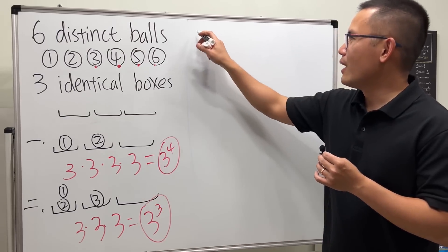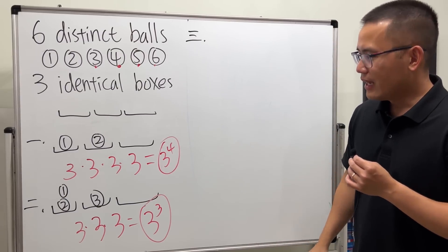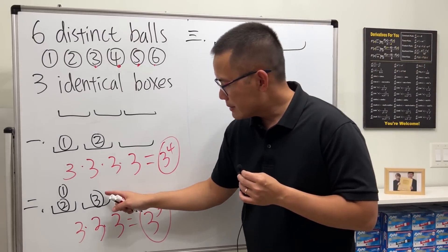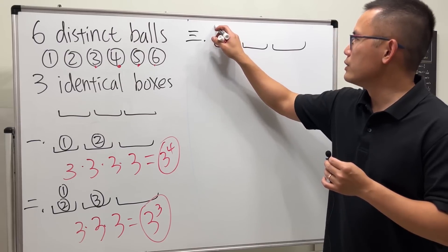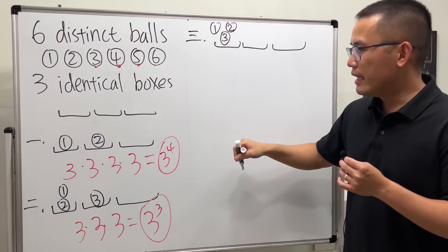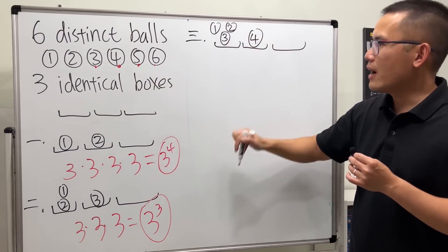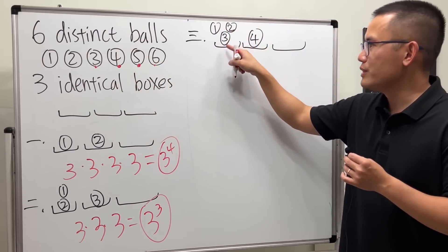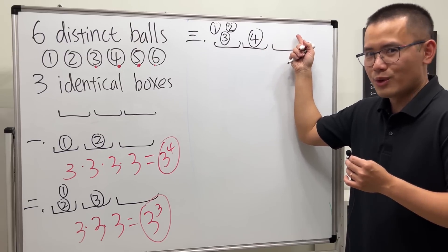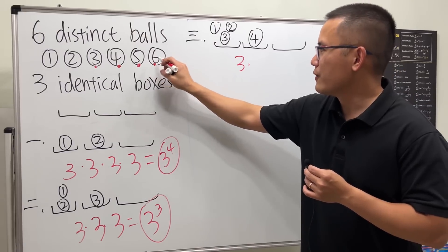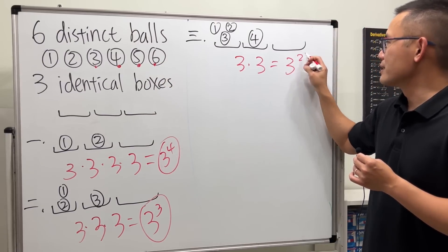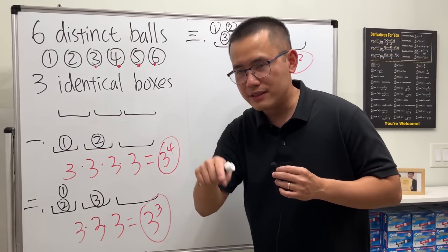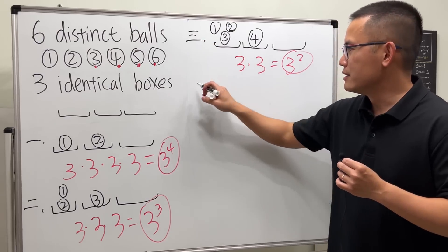Case 3: put balls one, two, and three into the first box and ball four into the second box. Now we only worry about balls five and six. Ball five can go with one, two, and three; with four; or alone — three choices. Then ball six also has three choices, giving 3 to the second power.